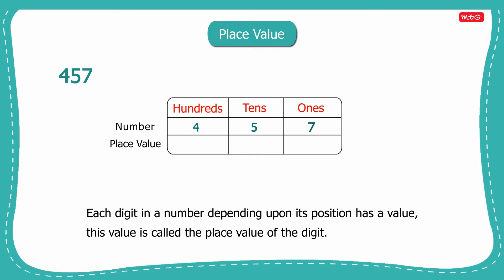The digit seven is at ones place, so its place value is seven ones or seven. Next, the digit five is at tens place, so its place value is five tens or 50. And the digit four is at hundreds place, so its place value is four hundreds or four hundred.